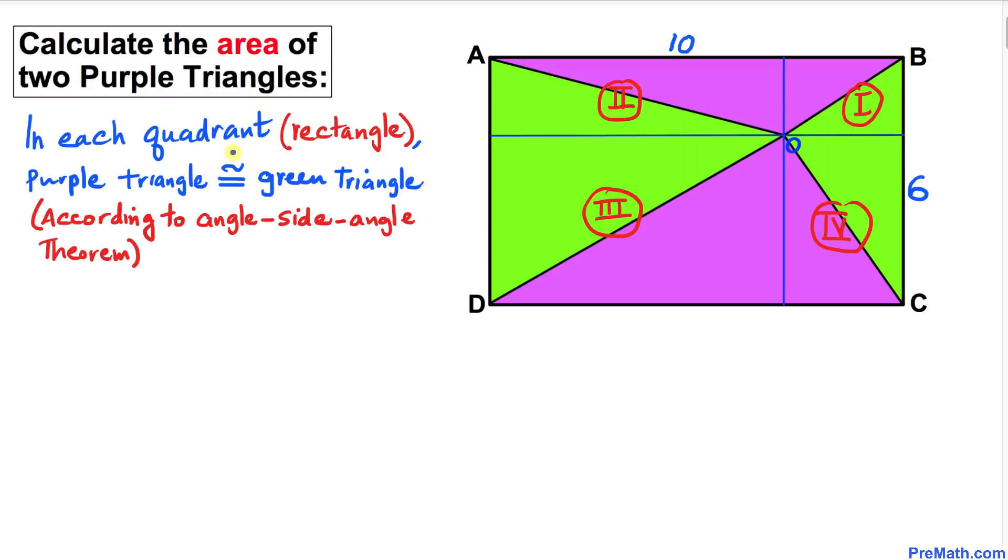Now let's make one observation: in each quadrant or rectangle, the purple triangle is congruent to the green triangle according to the angle-side-angle postulate. Let's focus on quadrant three, for example.